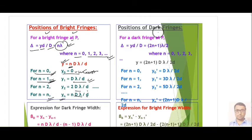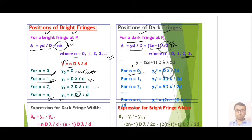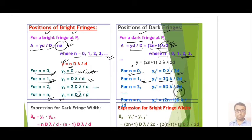For the position of a dark fringe, the path difference must equal (2n + 1)λ/2, i.e., an odd multiple of λ/2, where n = 0, 1, 2, 3, etc. The first dark fringe at n = 0 is at Y = Dλ/2d. Putting n = 1 gives the second dark fringe at Y = 3Dλ/2d, and so on.